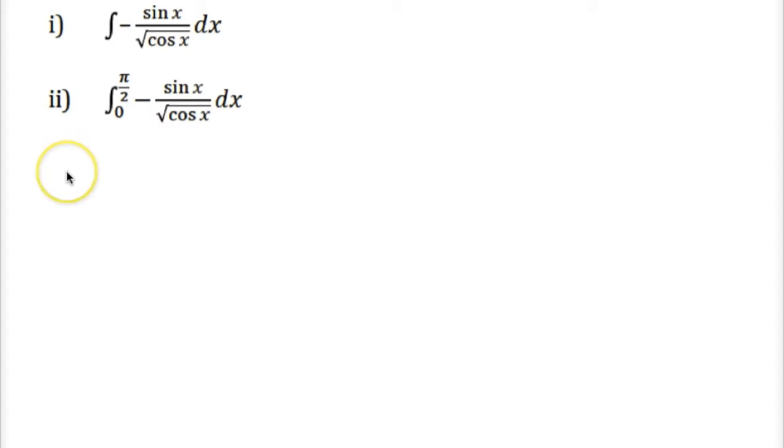You can first try to do this question by inspection. For example, let's see here. If we just try to assume that maybe we can start with cos x, and if we differentiate that, we would have negative sine x, which gives us our numerator, but that means we don't have the denominator.